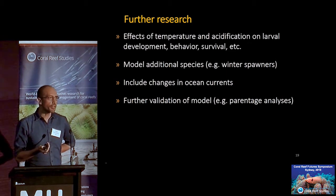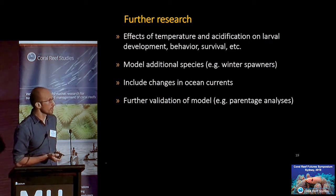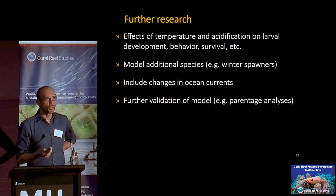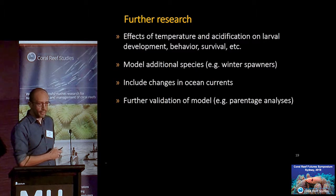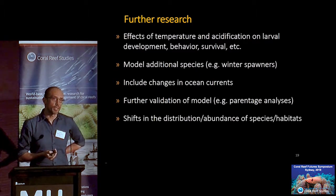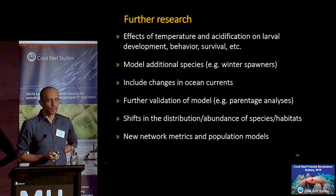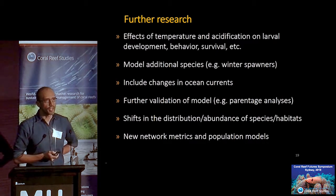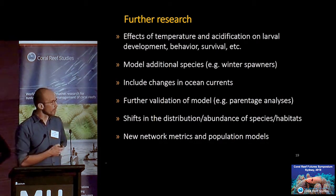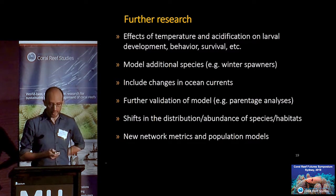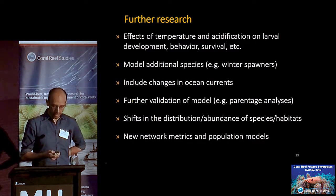There is a lot of interesting work coming out on apparent analysis — making sure models are predicting what we see in the field — and on shifting distributions and abundance of species and habitat. There's also work looking at different network metrics that can be used instead of typical eigenvector centrality, or parameterizing population models to see the actual benefits of the network rather than just using connectivity as a metric.